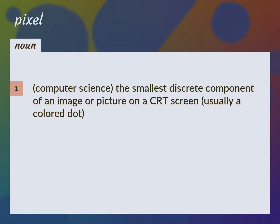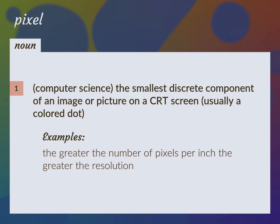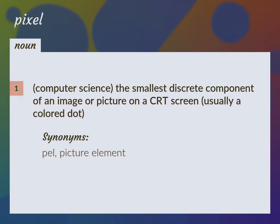Computer science: the smallest discrete component of an image or picture on a CRT screen, usually a colored dot. The greater the number of pixels per inch, the greater the resolution. Pixel: picture element.